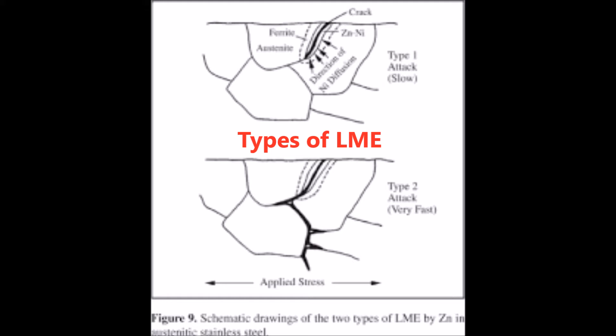Two types of attack are believed to occur in the embrittlement of austenitic stainless steel. In Type 1, embrittlement is a relatively slow process — the austenitic structure transforms to BCC ferrite, producing expansion and stress that initiates cracking. In Type 2, embrittlement occurs at a much faster rate, requiring an external stress to facilitate crack initiation.